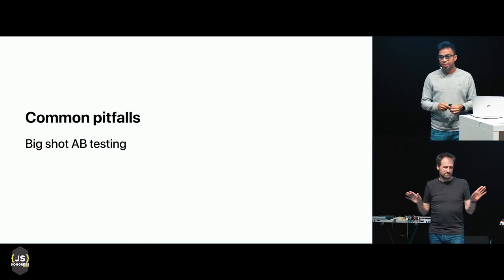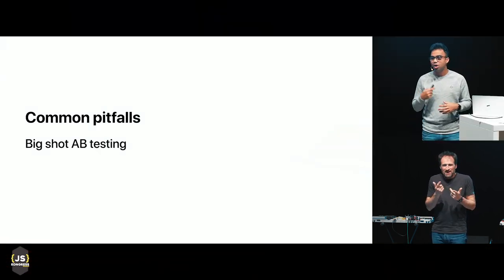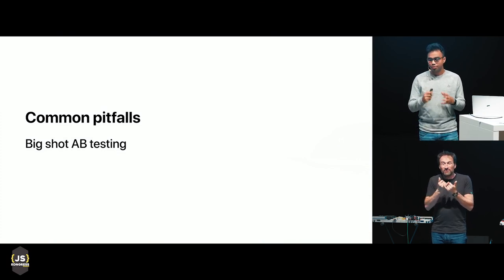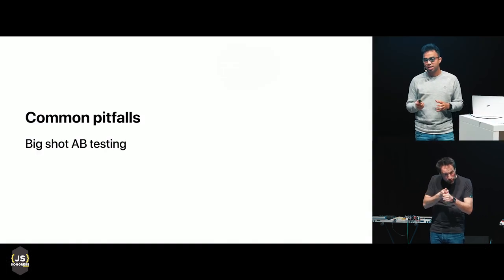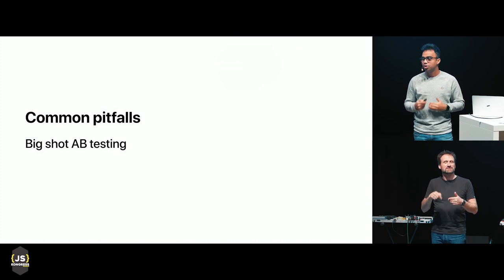Common pitfalls. First: big-shot A/B testing. This is very common — you change the entire website or landing page and end up saying we had 10% more sign-ups or 10% more conversion. The problem is you don't know what actually caused that impact, because 20 other things changed. And you don't have a future experiment roadmap — you don't know how to improve it further. You've got to track which features were replaced, how they interacted, and how that contributed to the result. After conversion increases, you need future experiment lines to keep improving.